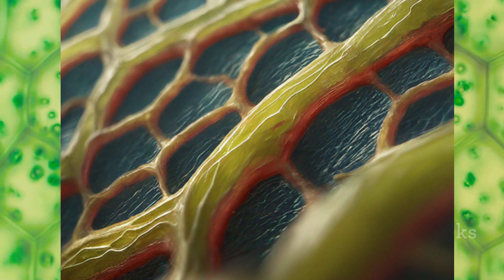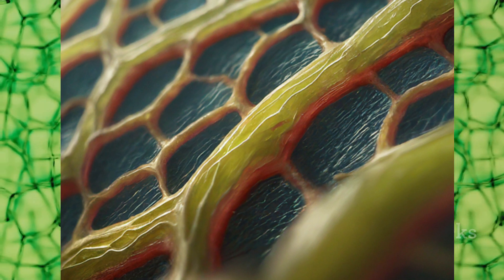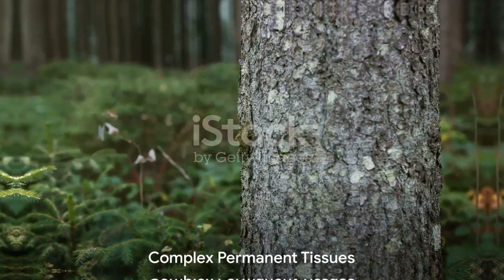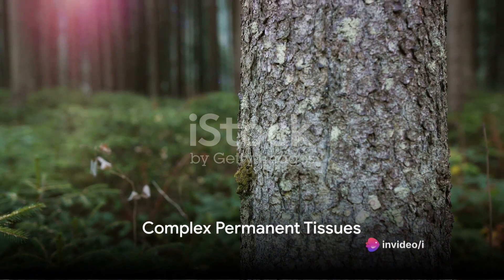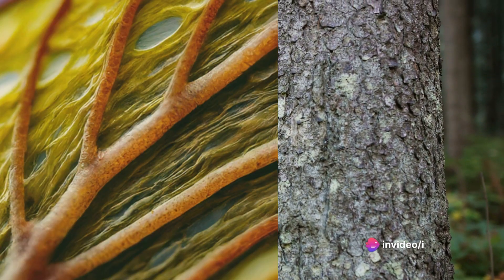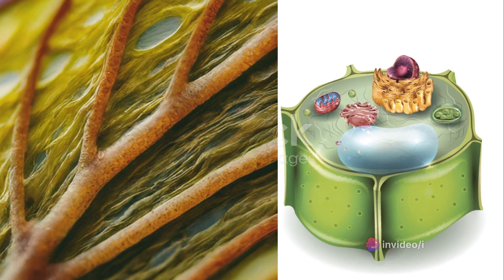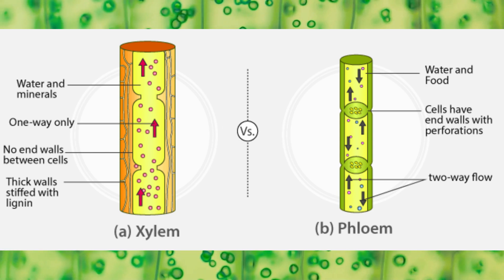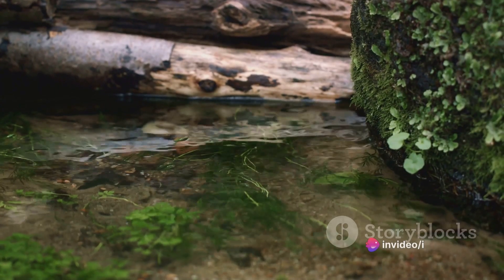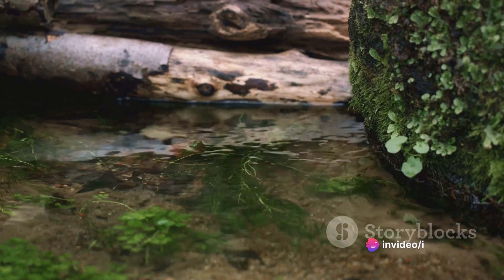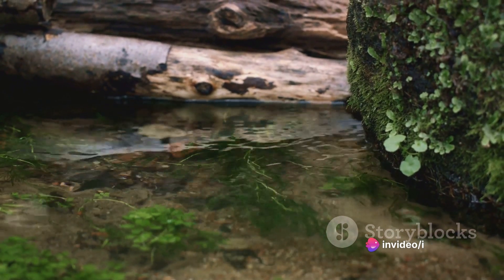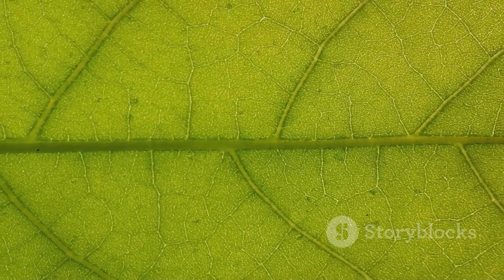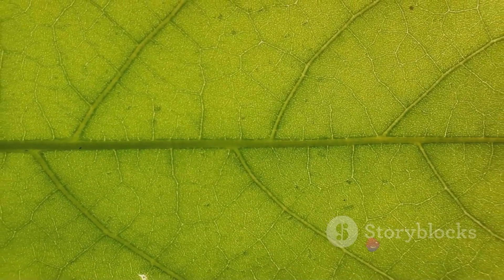Lastly, sclerenchyma cells are the tough guys of the plant world. They provide the plant with strength and support, thanks to their thick, rigid cell walls. Complex permanent tissues, as the name suggests, are a bit more complicated. They are heterogeneous and composed of different types of cells. The two main types of complex permanent tissues are xylem and phloem. Xylem is responsible for the transportation of water and minerals from the roots to other parts of the plant. Phloem, on the other hand, transports food and other nutrients from the leaves to the rest of the plant.